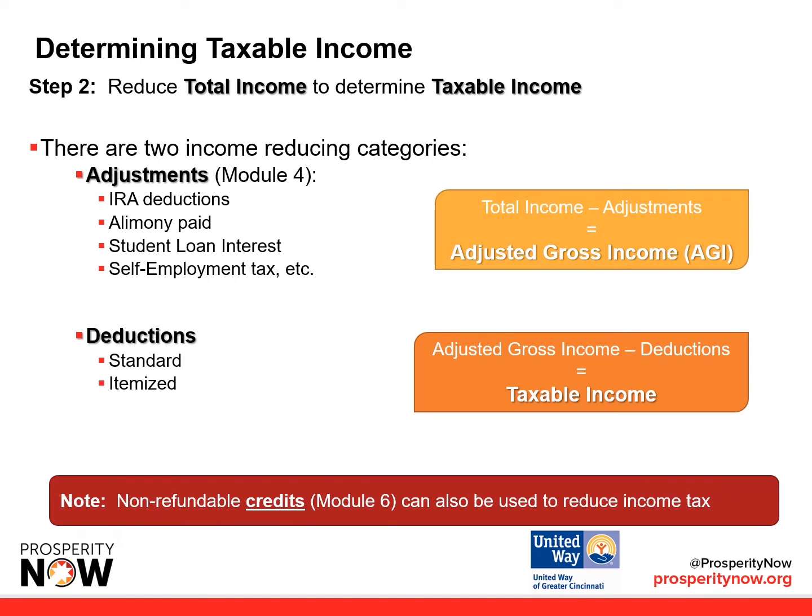Next, you reduce your total income in order to determine taxable income. There are two income-reducing categories: adjustments, which we covered in Module 4, and deductions, what we're covering now. Note that non-refundable credits, which are covered in Module 6, can also be used to reduce income tax.